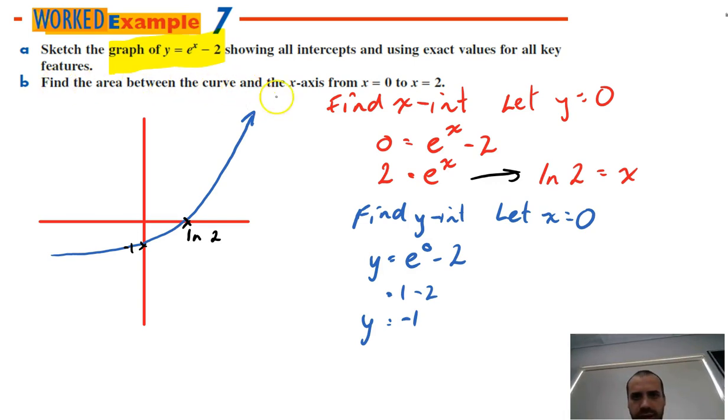Now, it says find the area between the curve and the x-axis from x equals 0 to x equals 2. So I need to find the area between the curve and the x-axis between this point, x equals 0, and this point, x equals 2. So those areas are here and here. Okay, so now that I know where those areas are, I just need to find the two areas.